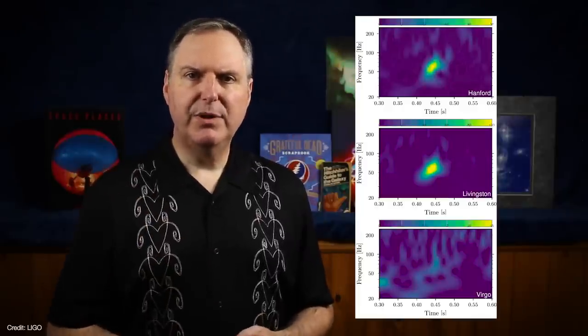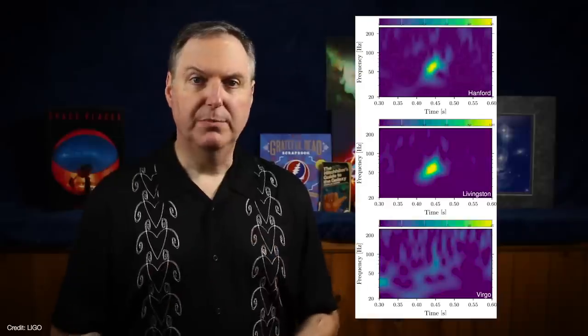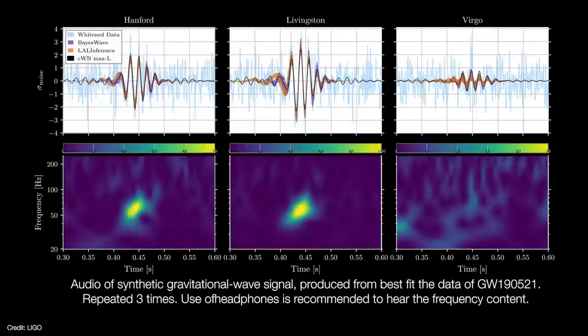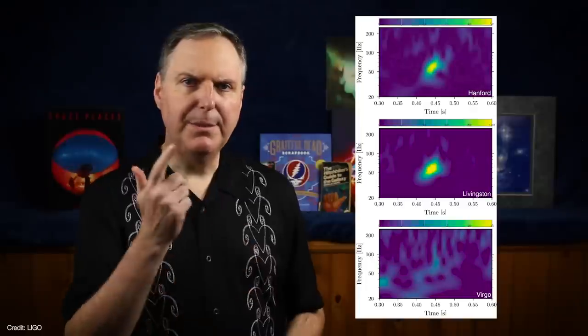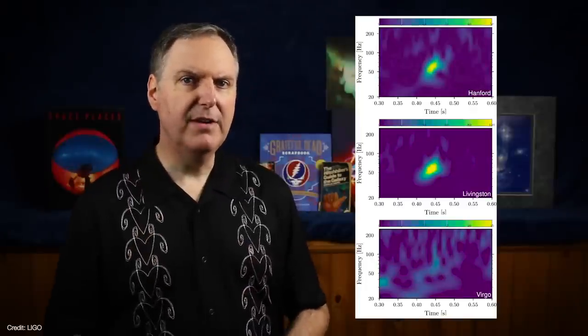However, on May 21, 2019, a gravitational wave was detected that was very different. Instead of the typical chirp structure, the detectors recorded a much shorter chirp, lasting less than 1/10th of a second. Not only that, but it also occurred at a much lower frequency than the others.